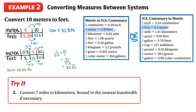Here is your second try question. We want to convert 7 miles to kilometers, rounding to the nearest hundredth - that's two decimal places. You can use the chart provided to help you solve this question.